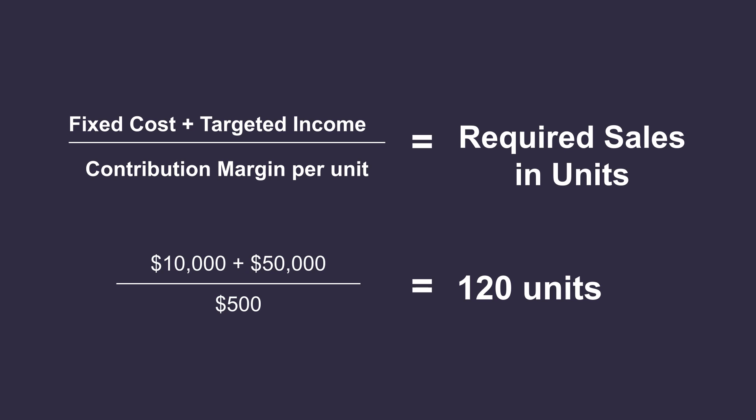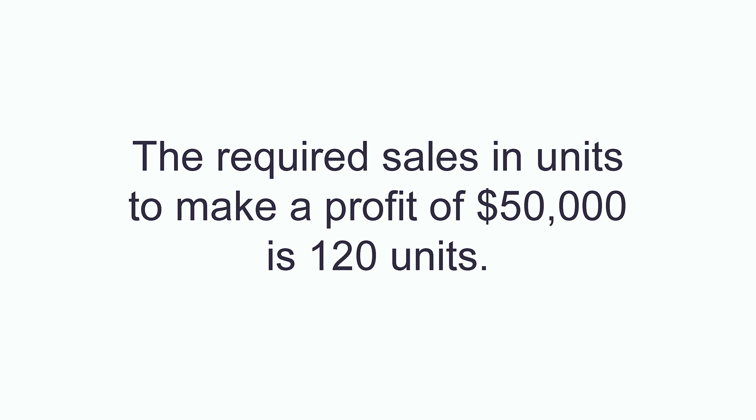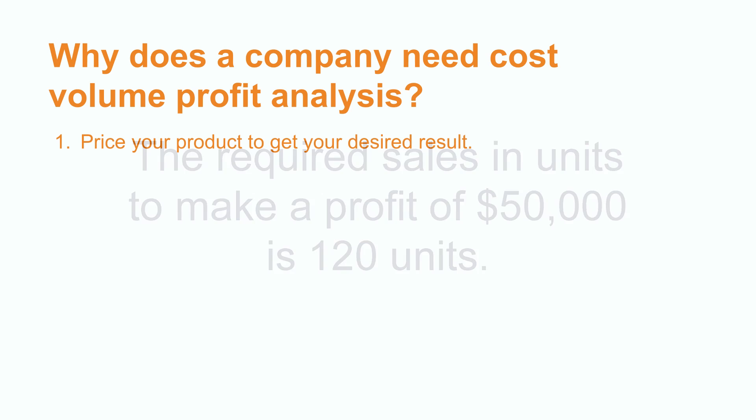Plugging the numbers into the formula: required sales in units equals $10,000 plus $50,000 divided by $500, which equals 120 units. Therefore, the required sales in units to make a profit of $50,000 is 120 units.